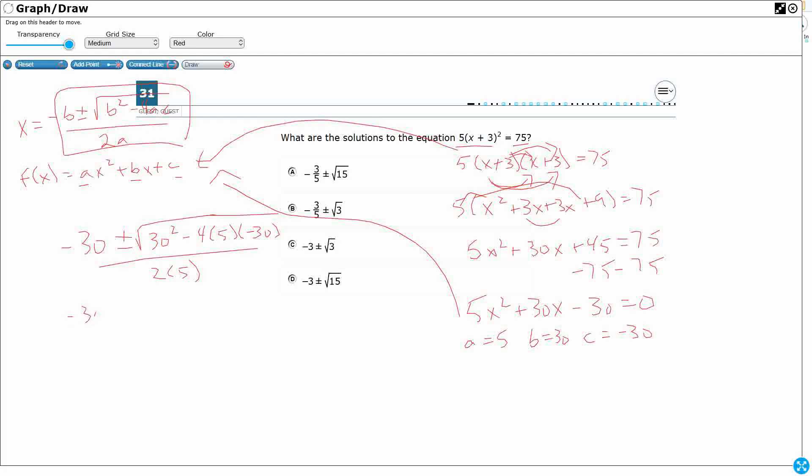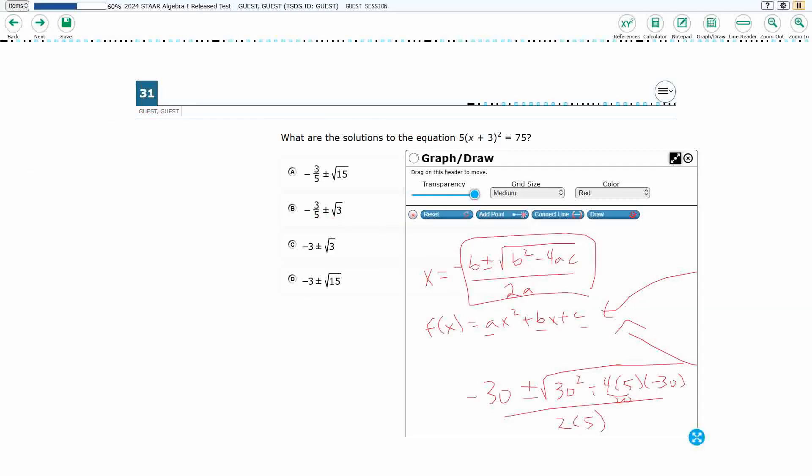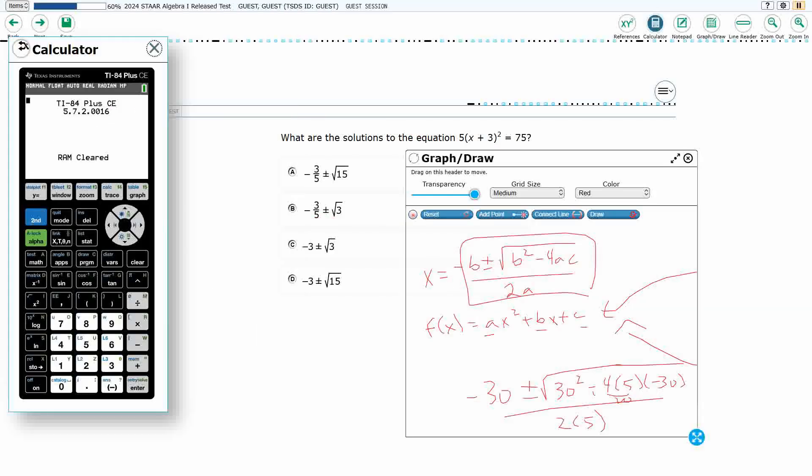So I end up with negative 30 plus or minus, let's figure out what this is. This is 900, and I'm going to end up getting a minus, and a minus this can be plus, that's 20, and 30. 600 over 10. So negative 30 plus or minus the square root of 1,500 over 10. And we need to think, well, what is the square root of 1,500? Is that something that easily works? Let's see. 1,500.